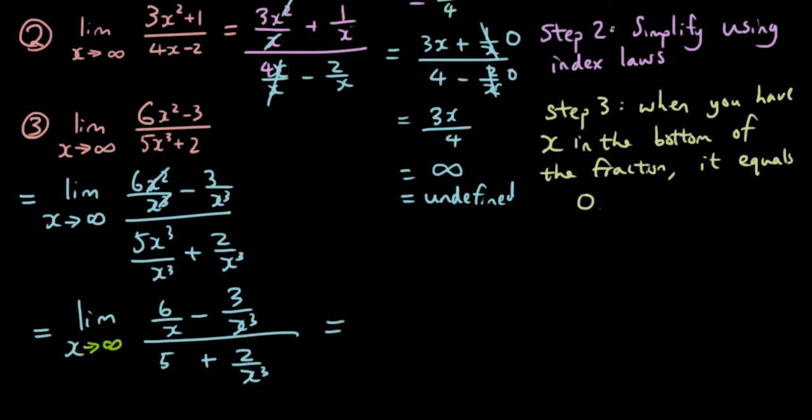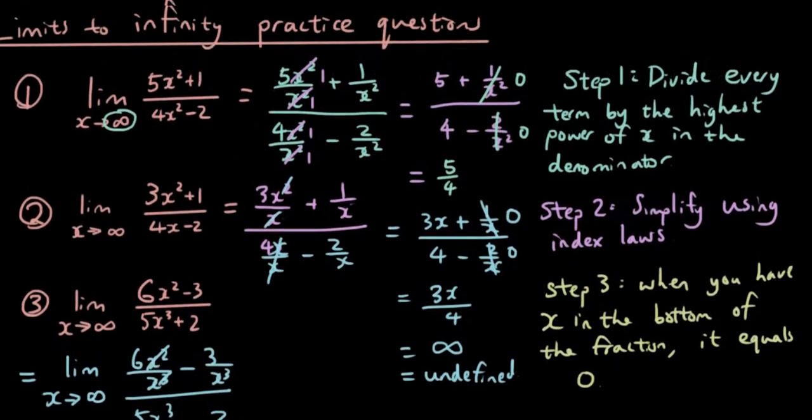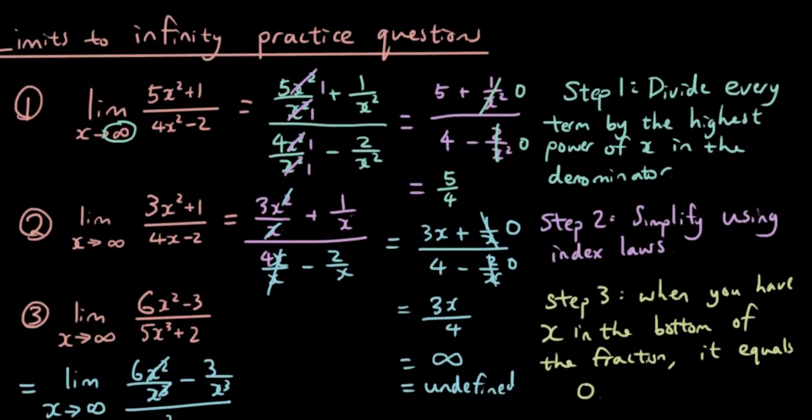Now, after you substitute in x is approaching infinity, 6 divided by infinity is 0, 3 divided by infinity is 0, then we have 5 plus 0, so the answer is 0 over 5, which is 0. So these are the three different types of questions you can get when you are doing limits.